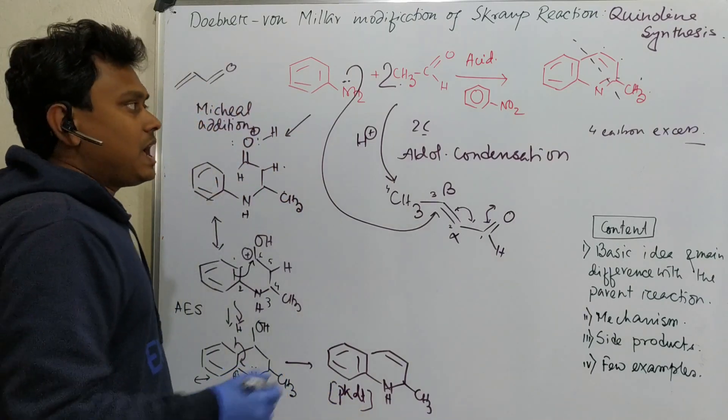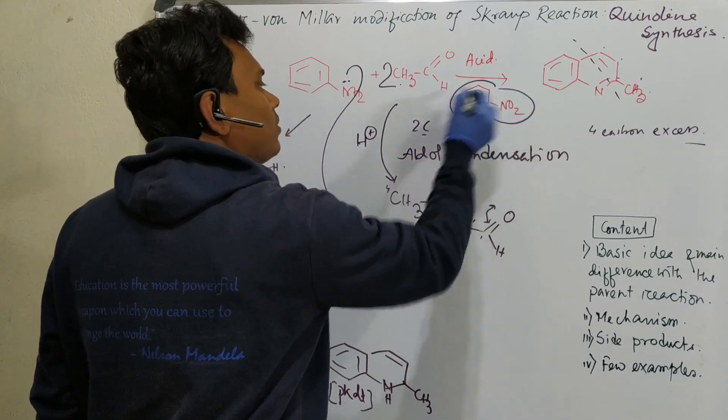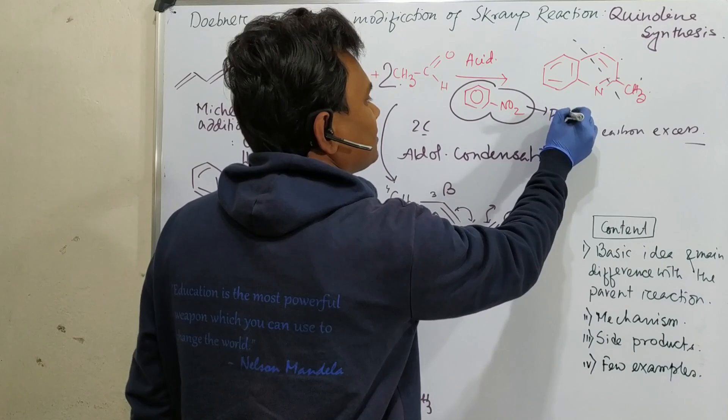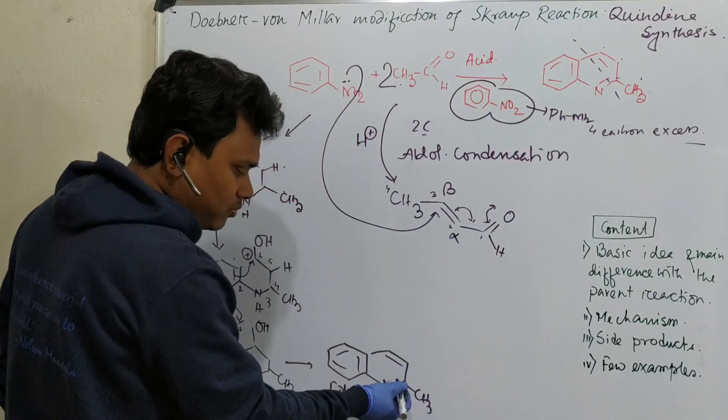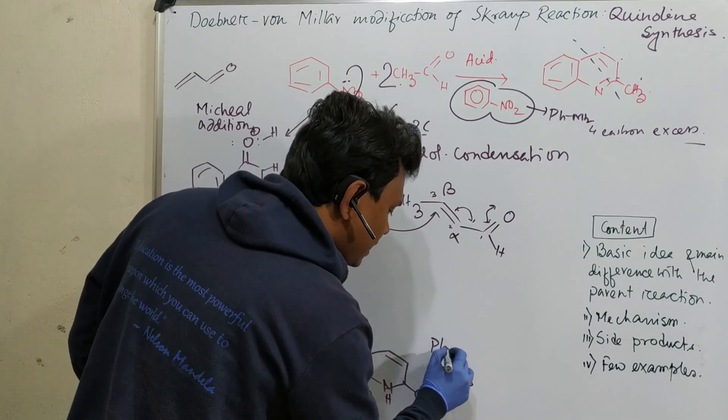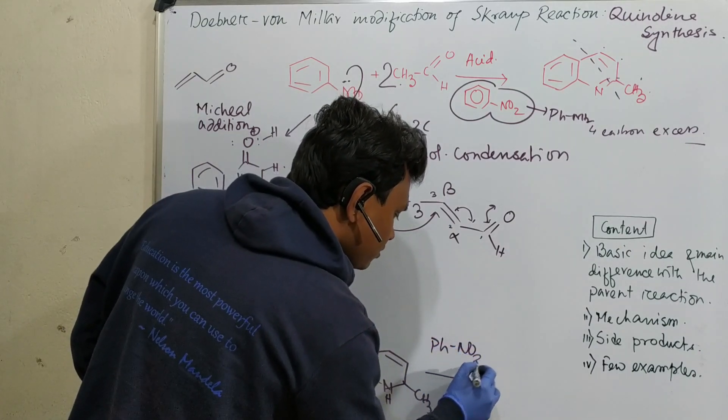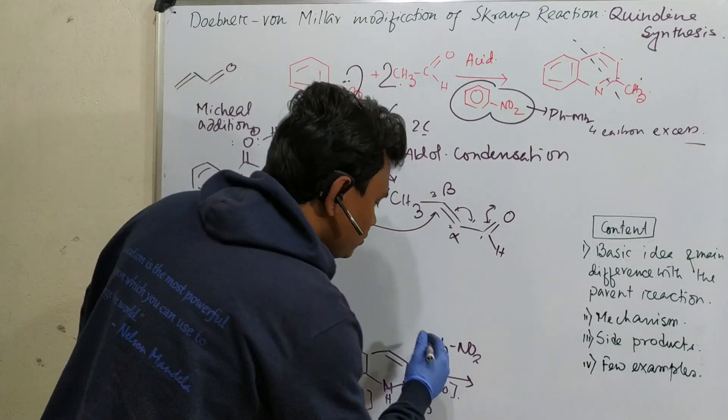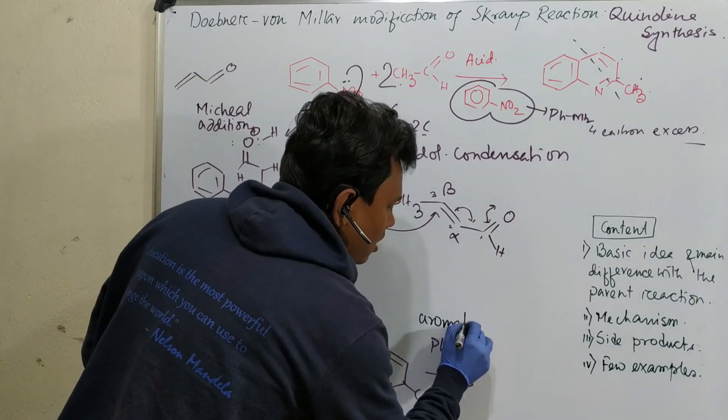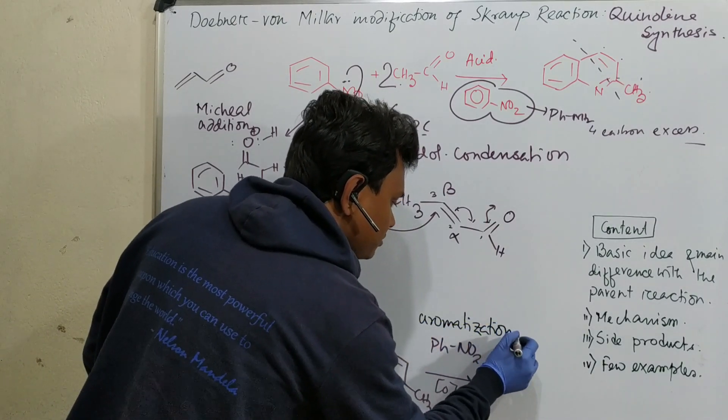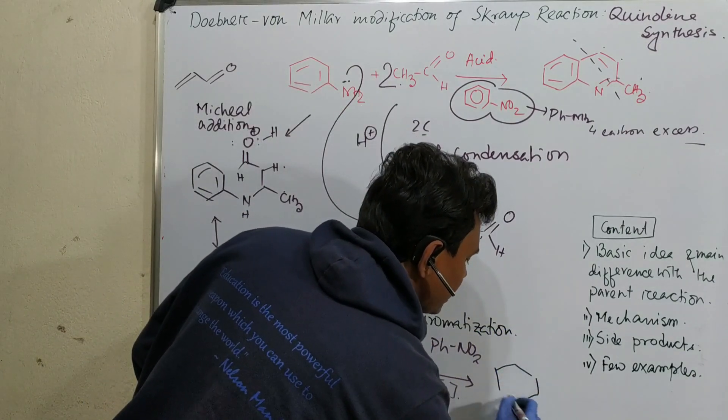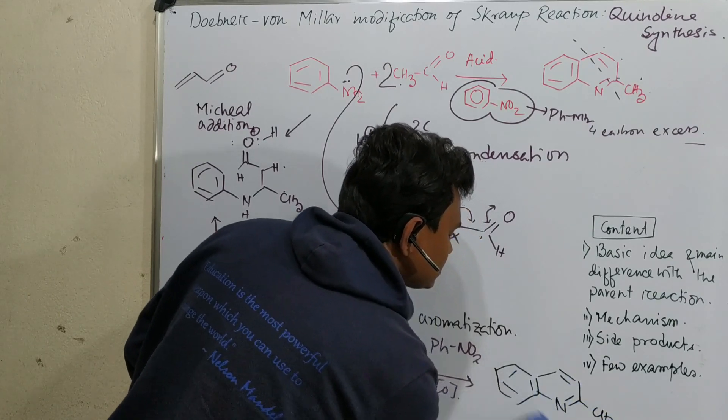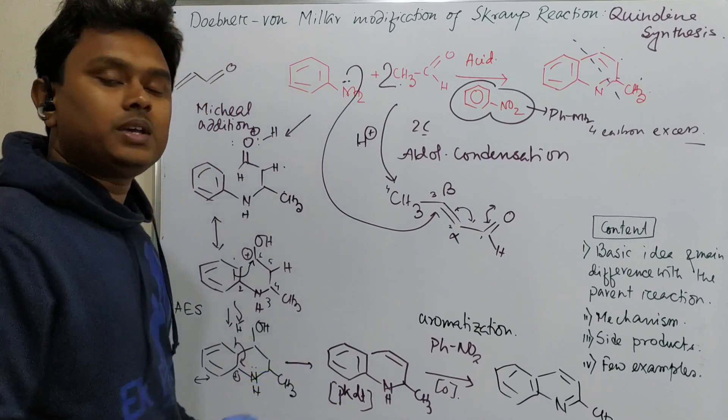So similar like Skraup reaction, some oxidant is needed. And in this case nitrobenzene is acting as an oxidant. What happens to nitrobenzene? Nitrobenzene is converted into aniline. After reduction and what happens with this? So in case of nitrobenzene this oxidation happens or you can instead of the word oxidation you can write the word aromatization. Because aromatization, aromaticity is the driving force for this reaction as the final product is gaining aromatic stabilization. So this is the final product. So in this way the reaction proceeds.